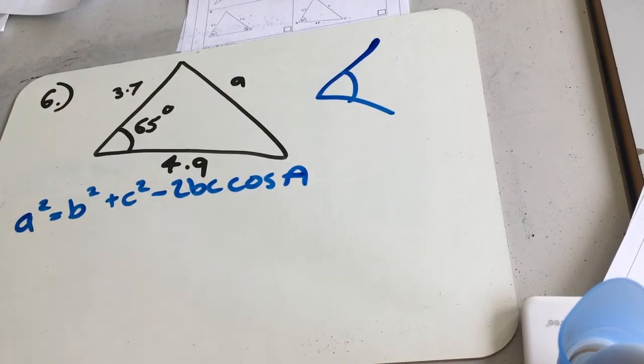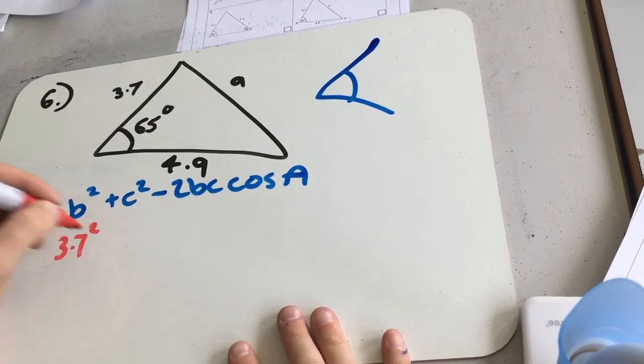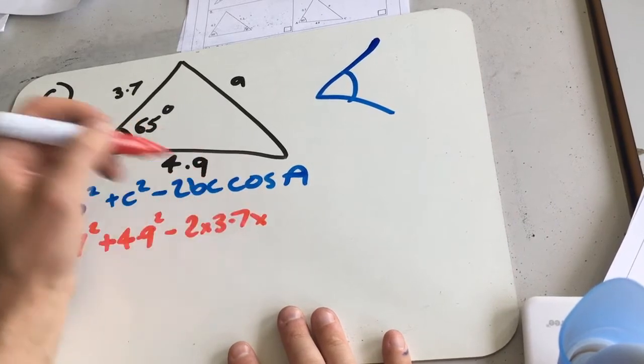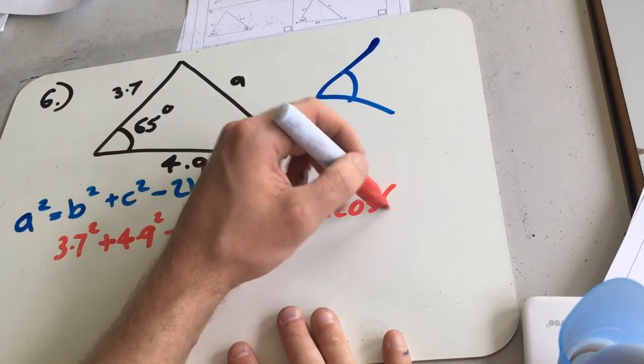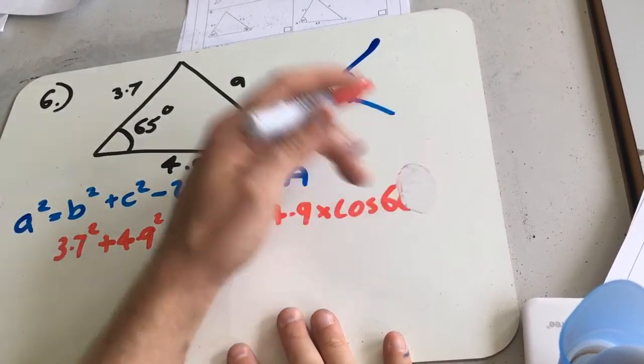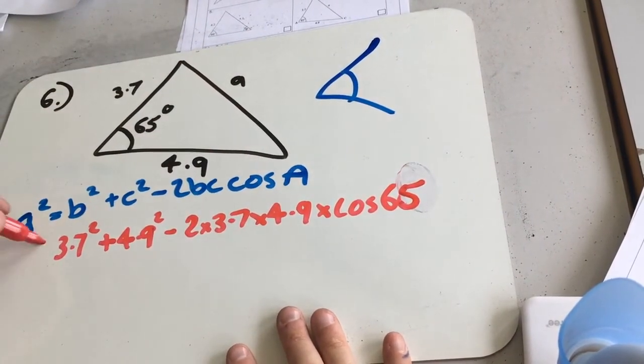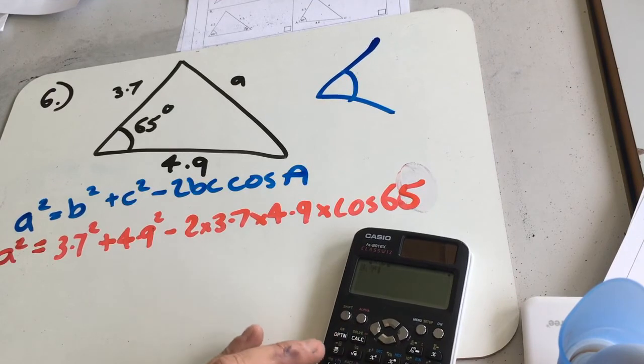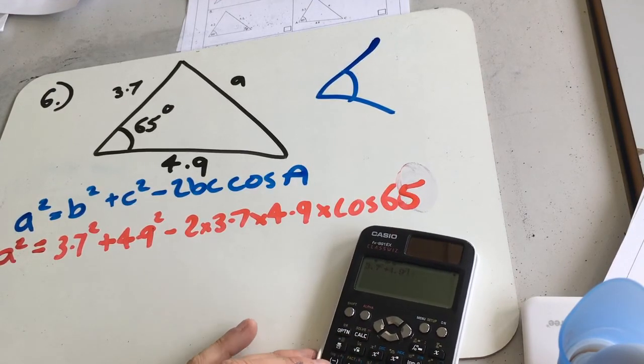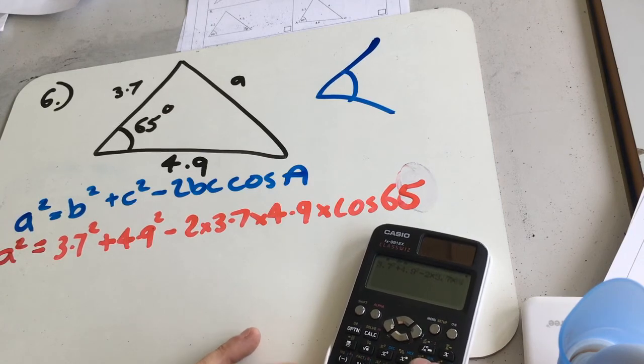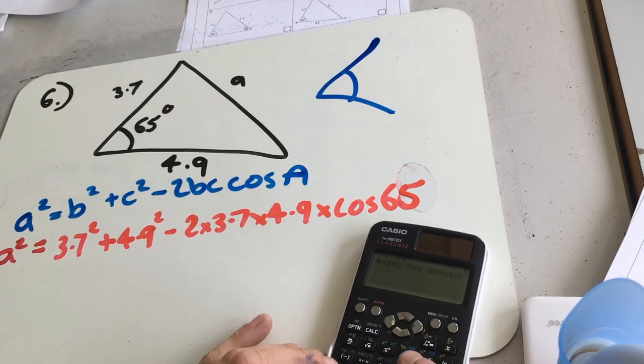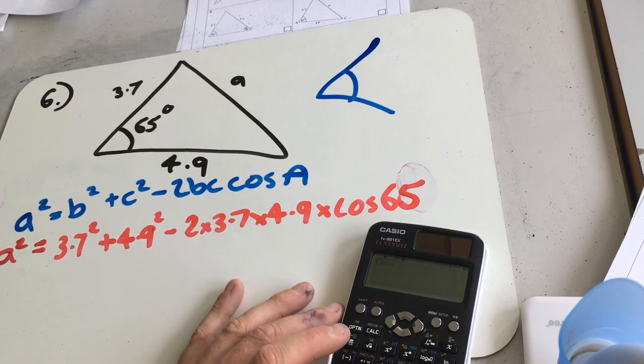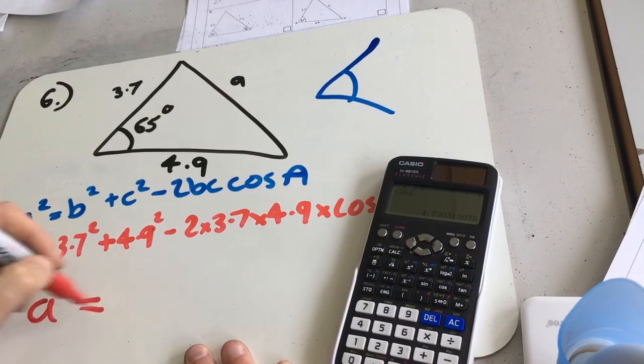I'm just going to put everything into this equation. So B can be 3.7. C can be 4.9 minus 2 times 3.7 times 4.9 times cos of 65 there. And that's going to be equal A squared. So if we calculate that and then square root it, we're going to get 3.7 squared plus 4.9 squared minus 2 times 3.7 times 4.9 times cos of 65. Which gives us 22.4. Square root that, and we get 4.7. So A equals 4.7.